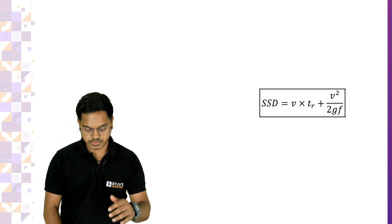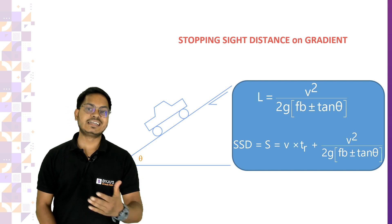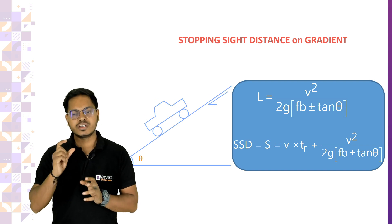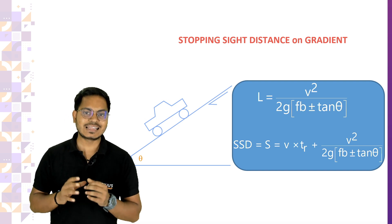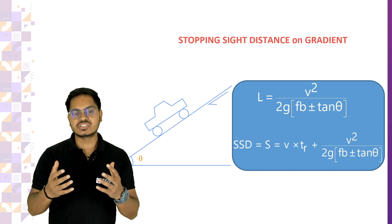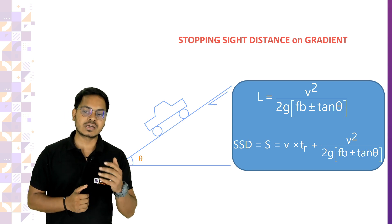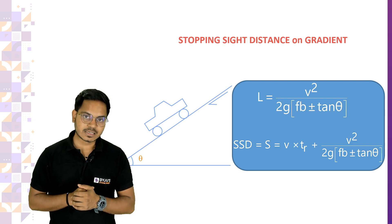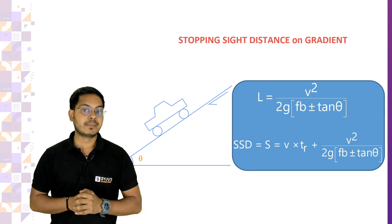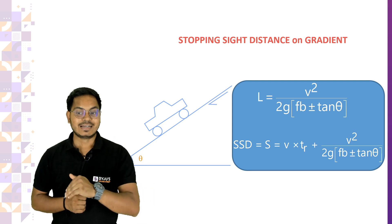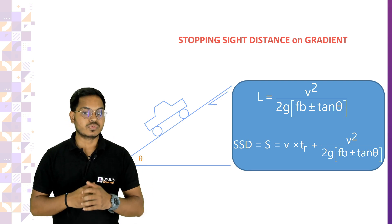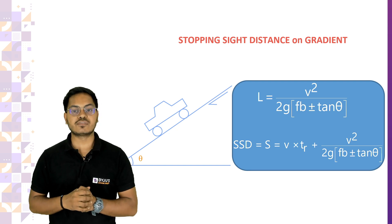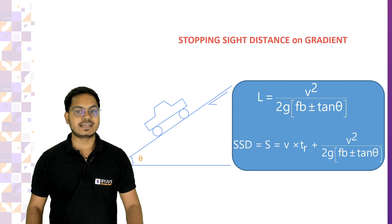There is one more case. Suppose you are having a gradient on the road. In that case, nothing will change in the lag distance. Only there will be a change in brake distance. That change is very simple and will come in the denominator as plus or minus tan theta. Plus when the vehicle is going up gradient, minus when the vehicle is going down the gradient. This is the modified or with gradient value of the stopping sight distance.